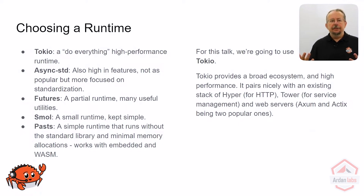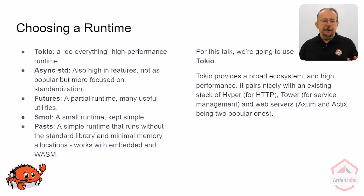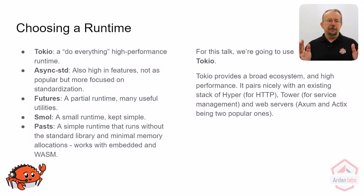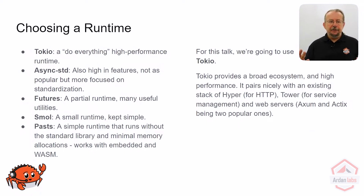SMOL is worth mentioning because if you just need to cram your async service down to run in something tiny, SMOL is built around that — it makes it as small as humanly possible. And there's one called Pasts, which focuses really hard on minimizing memory allocations, working well in embedded, and also in WebAssembly. So if you want to write Rust that runs in a browser via WebAssembly — taking advantage of how fast WebAssembly can be in the browser without suffering from the impedance mismatch when WebAssembly threads work differently from Rust threads — Pasts will give you the tools you need.